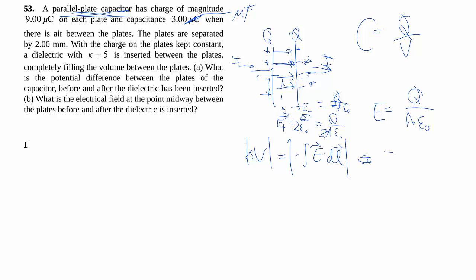With the uniform field, this just becomes E times D, whatever the separation distance is. So that's how we arrive at C is equal to Q over V, which is Q over Q over A epsilon naught times D, which is the voltage. The Q always cancels out, and we end up with that expression there.